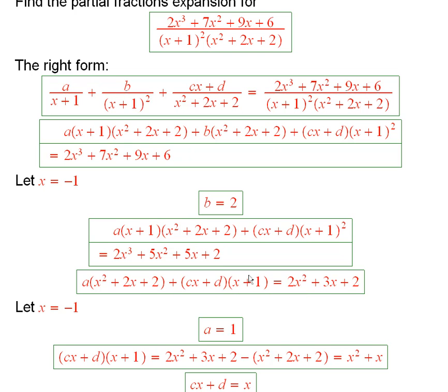Now, what we'll do is, again, let x equal to negative 1. And when we do that, we have 1 times a is equal to 1. So now I found a and I found b.